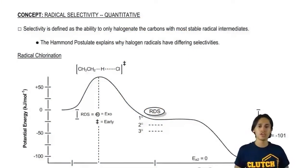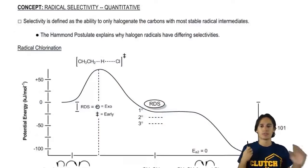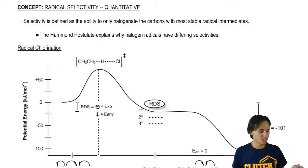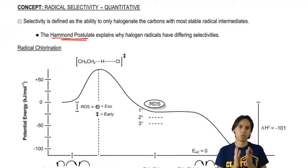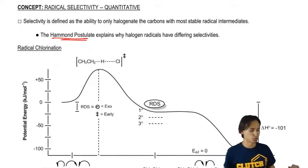Let me show you that now. Once again, my definition of selectivity hasn't changed, but I'm going to use the Hammond postulate to explain why bromination is so much more selective.